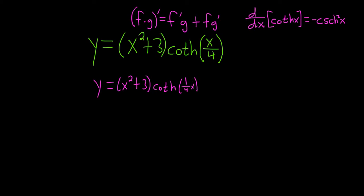This just makes it a little bit easier because when we take the derivative of the inside, it's easier to think about taking the derivative of one-fourth x than x over 4. When you take the derivative of one-fourth x, you basically take the derivative of x, which is 1, and the one-fourth hangs out.